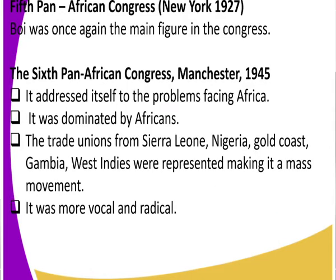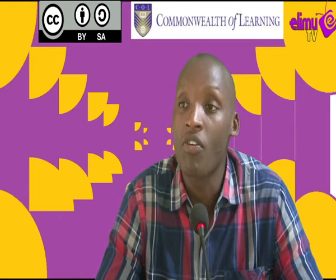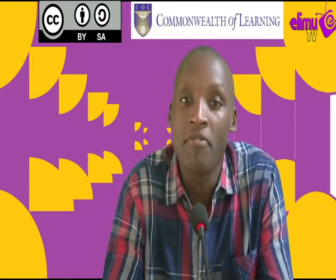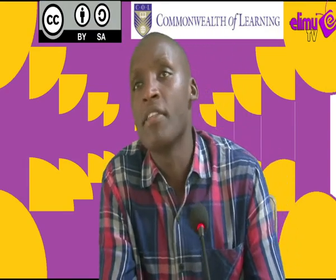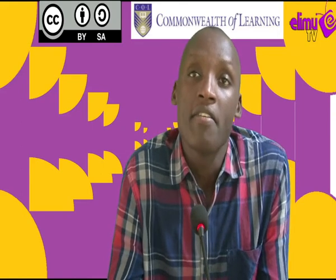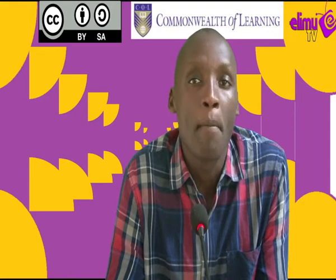Then we have the fifth conference, headed by Du Bois, who was one of the main figures. The recommendations also stressed on the previous congresses. And the last Pan-African Congress was held in Manchester in 1945. It addressed the problems facing Africa. In 1945, a number of Africans attended — Jomo Kenyatta from Kenya and Kwame Nkrumah from Ghana. This conference was dominated majorly by Africans, unlike the third conference that had 41 Africans.